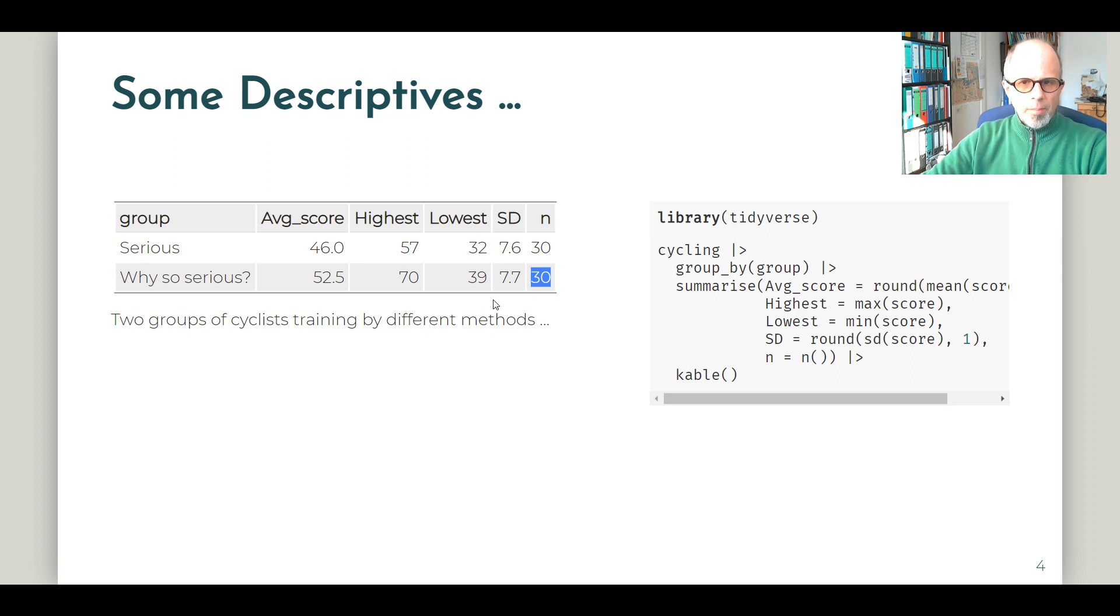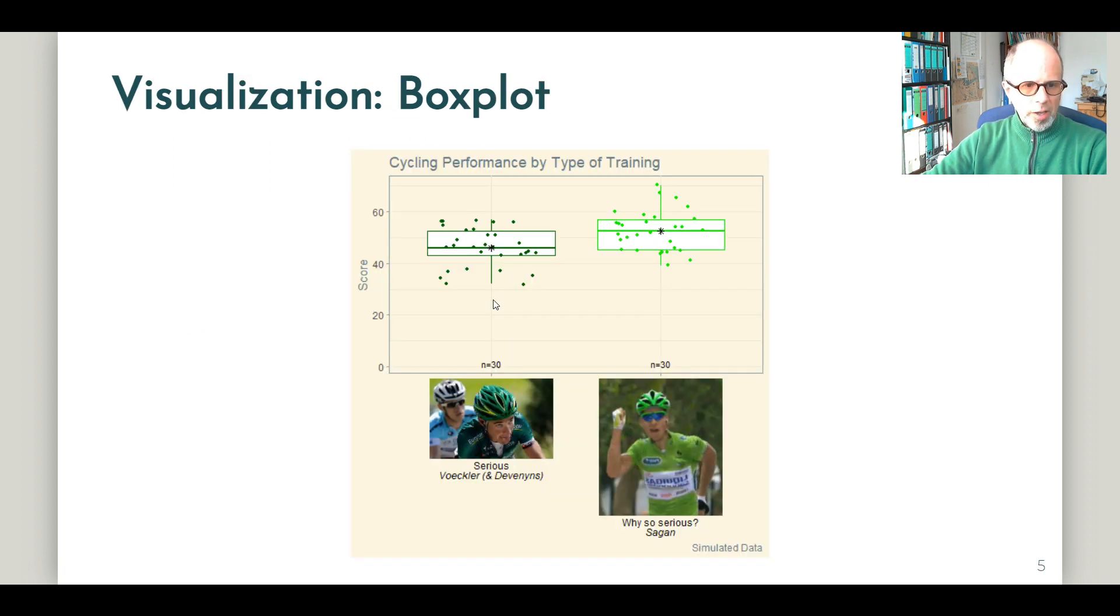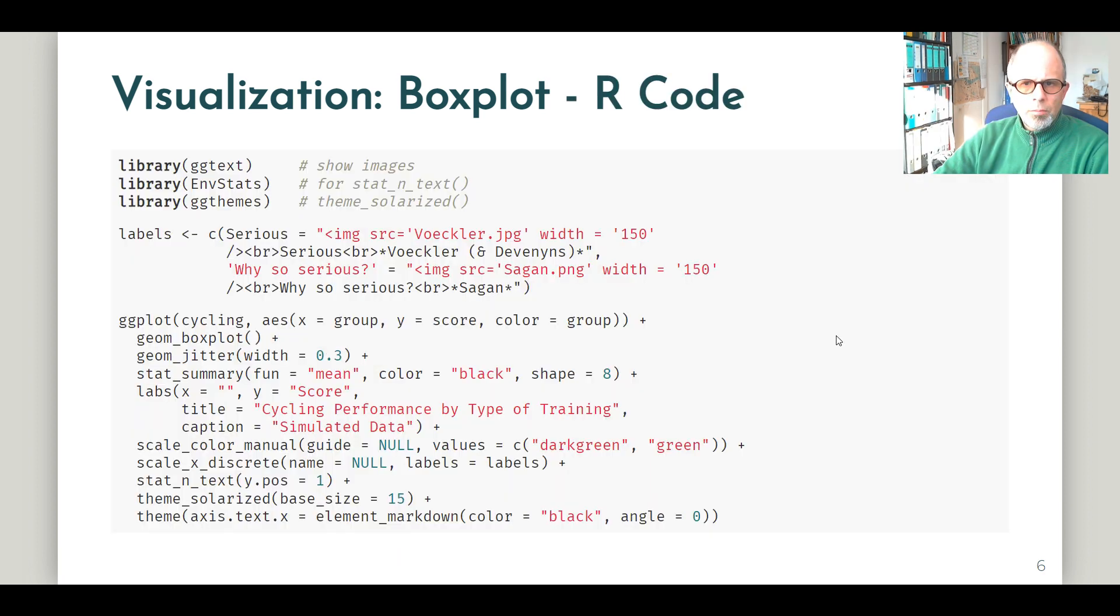Let's just look at a quick visualization. The box plots indicate also that the why so serious group is more successful in their performance than the serious group. The asterisk denotes the mean value that I added to the median in the box plot. So we see mean and median are the same, and also the distribution of the individual data points. Let's just assume that the data are fairly normally distributed. This is the R code. So those who are into R programming may want to stop the video here.